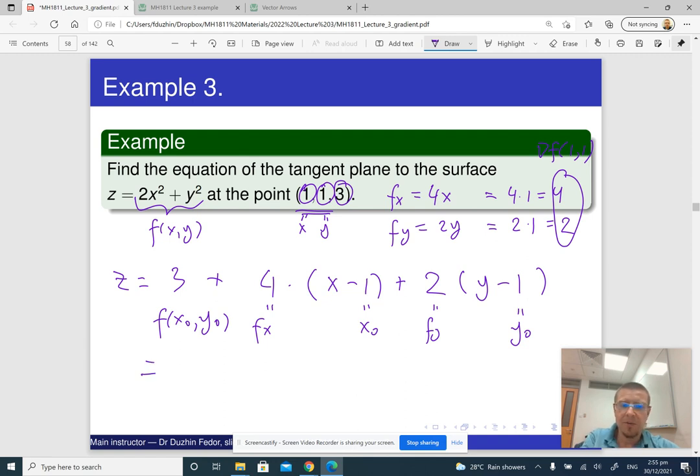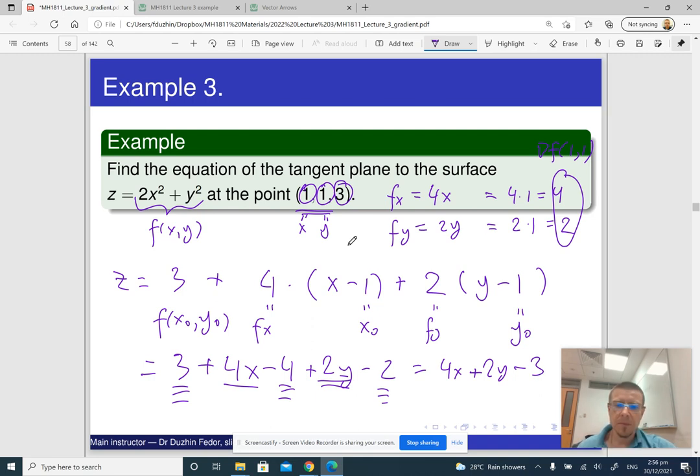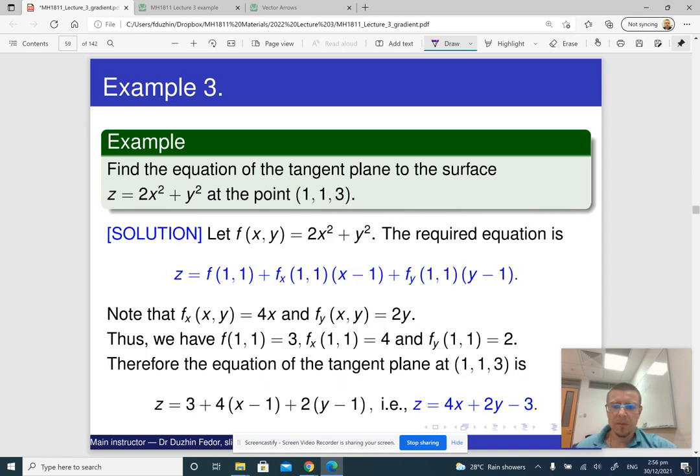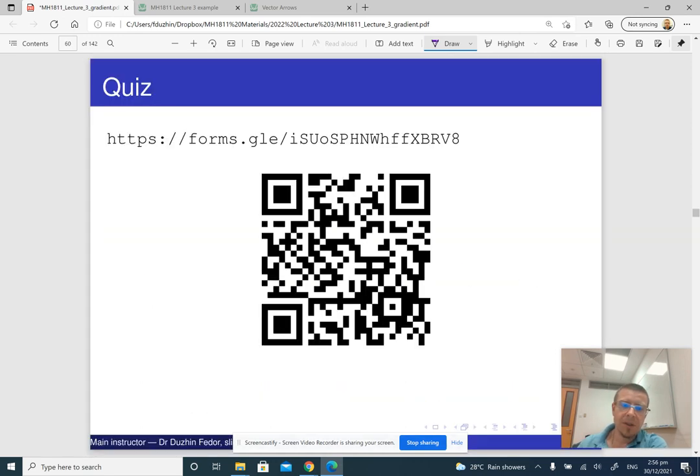So we can just simplify it a little bit. So 3 plus 4x minus 4 plus 2y minus 2. So now, we can just rewrite it with 4x. It's going to be 4x plus 2y. And 3 minus 4 minus 2 is, I think, minus 3. So that's the answer here. All right, so that's it for this part.